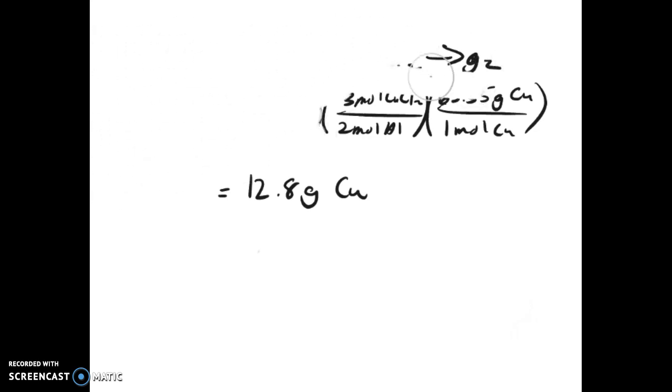That's all stoichiometry really is, is being able to convert a mass or moles of one substance in a reaction to the mass or moles of another substance in a reaction. It's pretty simple, but it takes a lot of work. You have to be careful of sig figs and make sure that your coefficients are exact because they're done by counting.